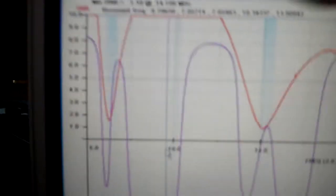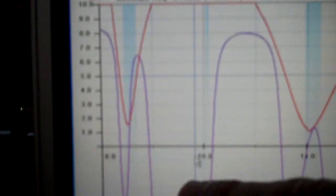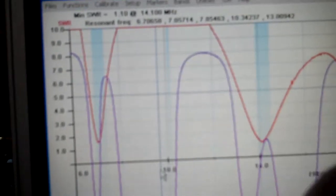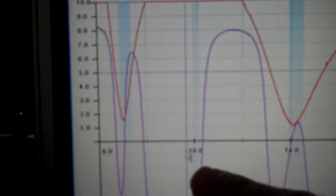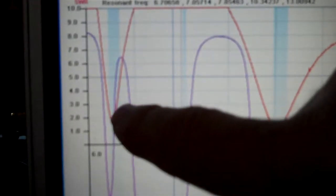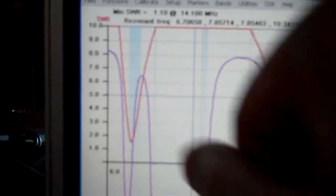This is the 40 meter band right here. This is the SWR and this gray or purple is the resonant frequency. So you can see we have a nice dip of SWR, a little below 2.0 there, right in the middle of the band.